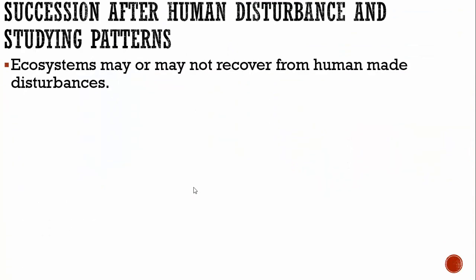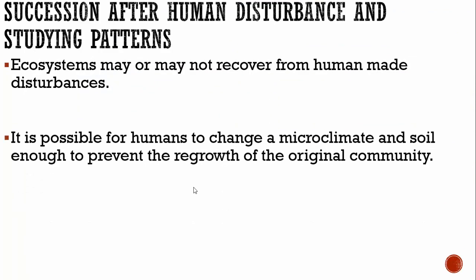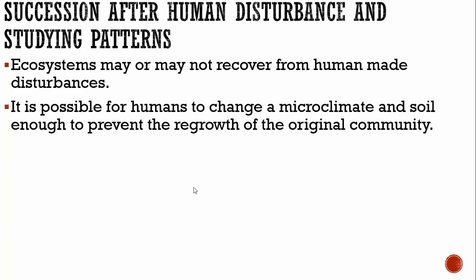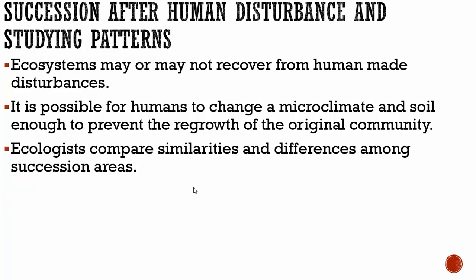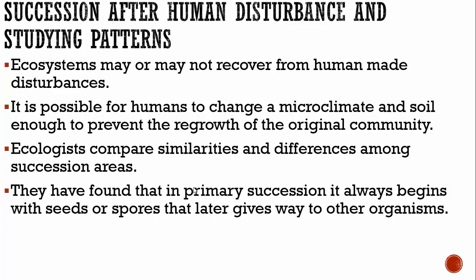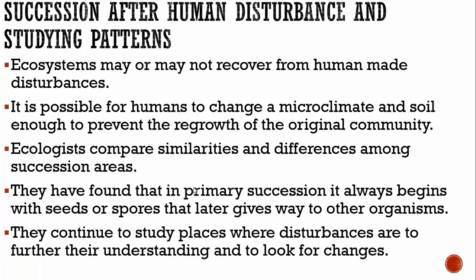Succession after human disturbance: ecosystems may or may not recover from human-made disturbances. It is possible for humans to change a microclimate and soil enough to prevent the regrowth of the original community. Ecologists compare similarities and differences among succession areas, and have found that in primary succession, it always begins with seeds or spores that later give way to other organisms and eventually the climax community. Ecologists continue to study places where disturbances occur to further their understanding and look for changes.